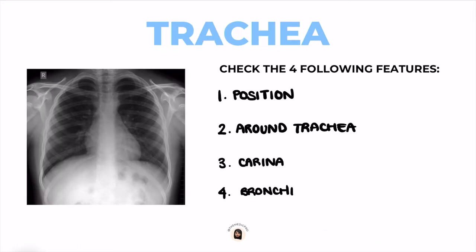Let's start with the trachea. We look for four following features. Number one, the position — check whether the trachea is central or deviated. Number two, look around the trachea for any paratracheal masses or lymphadenopathy in the case of malignancy. Number three, check the carina, which is the bifurcation of the trachea, and is an important landmark for nasogastric tube placement. Number four, check whether you can see the right and left main bronchus.